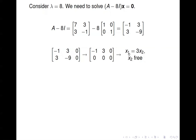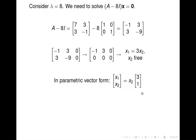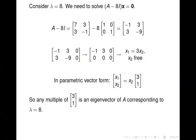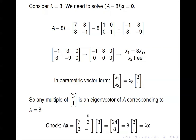In this case, we end up with x1 equals 3x2, and x2 is free. Writing it in parametric vector form, any multiple of the vector (3, 1) is an eigenvector of A corresponding to lambda equals 8. You can check that: A times x should equal lambda times x. Multiplying A times x gives the vector (24, 8), and we can factor out 8 to get 8 times (3, 1) — and (3, 1) is our vector x. So that equals lambda x, confirming this is an eigenvector corresponding to lambda equals 8.